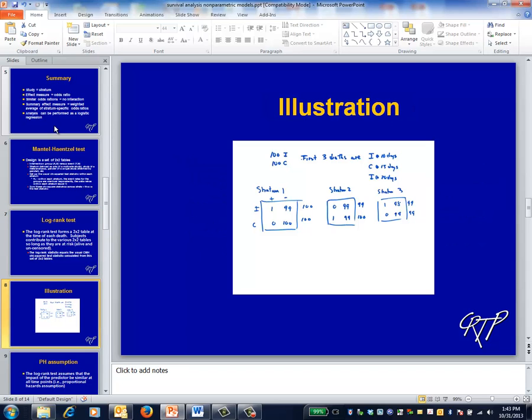Here's an illustration of a trial that starts with 100 intervention patients and 100 controls. At the time of the first death, the risk set is 200 patients, labeled as stratum 1. The death occurs in the intervention group. At the time of the next death, stratum 2 now has 100 control patients at risk, but only 99 intervention patients because of the previous death. The analysis proceeds as before.